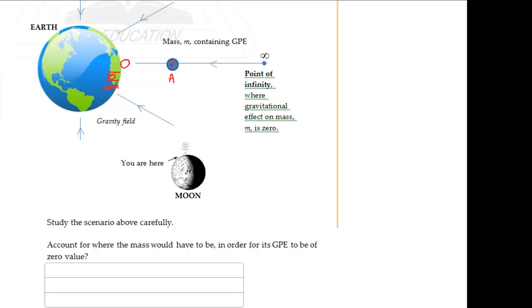Simply, GPE is stored energy, as we understand, stored energy on a mass by the gravitational field system. At the point of infinity, the effect of that gravitational field on that mass is zero. So as such, at that point of infinity, we can conclude that there is no stored potential energy on the mass by the gravitational system.